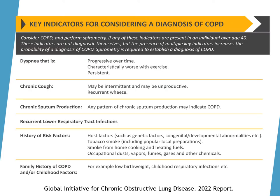This chart from the GOLD guidelines covers key indicators for considering a diagnosis of COPD. Ultimately, spirometry is needed to confirm a diagnosis, but these factors give you a good idea of whether a patient may have COPD. You should assess dyspnea — is it progressive, worse with exercise, persistent? Also ask about chronic cough characteristics, sputum production, history of lower respiratory tract infections, environmental and family histories, exposures to risk factors, and childhood factors that may increase their risk.